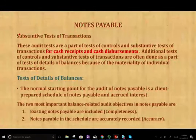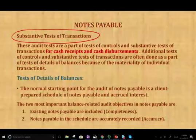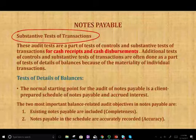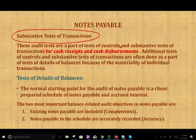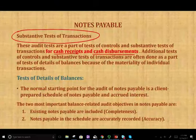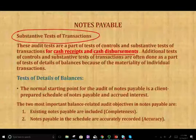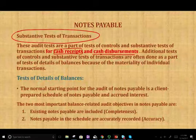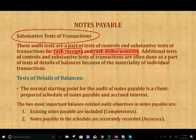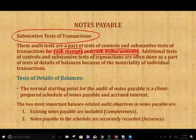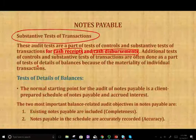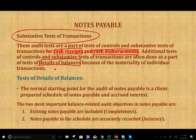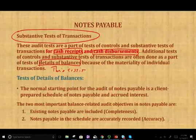When it comes to substantive test of transaction, we're skipping over the substantive test of transaction. These audit tests are part of control and substantive test of the cash receipts and cash disbursements. For the transaction that takes place in this cycle, we do the audit when we did cash receipts and cash disbursements we already did earlier. The additional test of control and substantive test of transaction are often done as part of the test of detail balance, which we're going to be doing in this session.